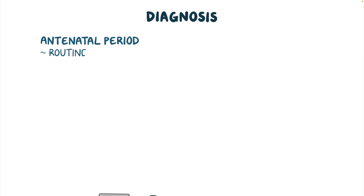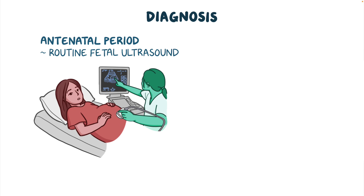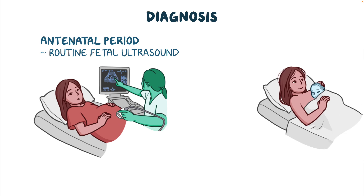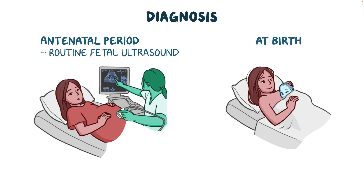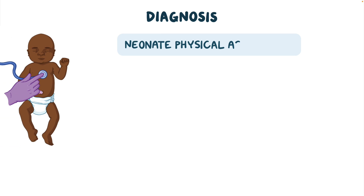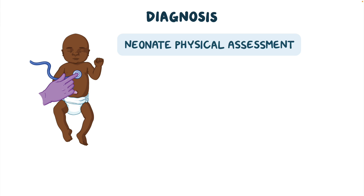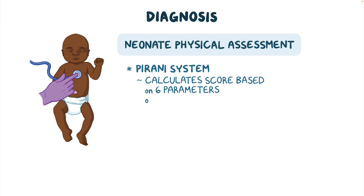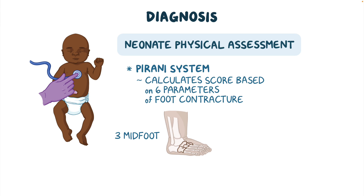Clubfoot can be diagnosed during the antenatal period during a routine fetal ultrasound, but usually the diagnosis is made at birth. During the neonate's physical assessment, the severity of the deformity can be scored using the Pirani system, which calculates a score based on six parameters of foot contracture — three involving the midfoot and three involving the hindfoot.